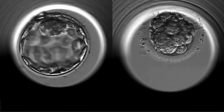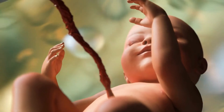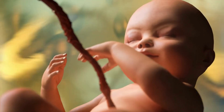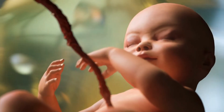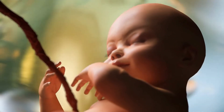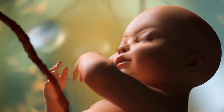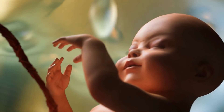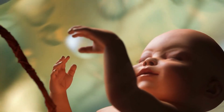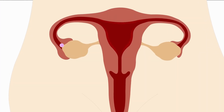The blastocyst then attaches itself to the lining of your uterus, the endometrium. This attachment process is called implantation. However, just because conception occurs doesn't mean implantation will. Sometimes implantation doesn't happen, and you pass the fertilized egg in your next menstrual period.